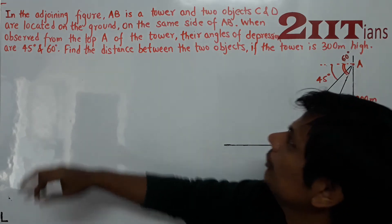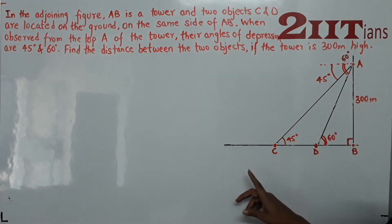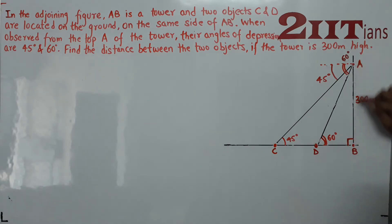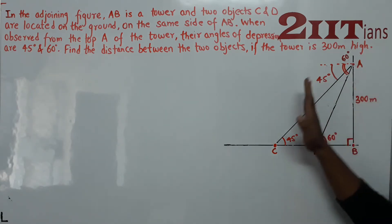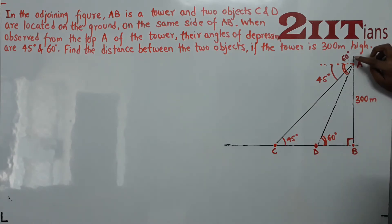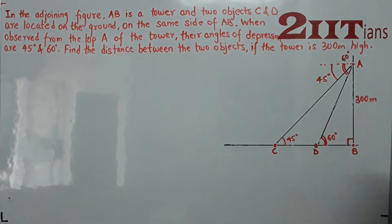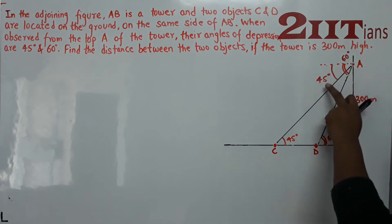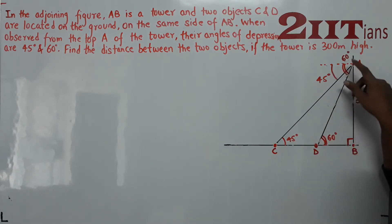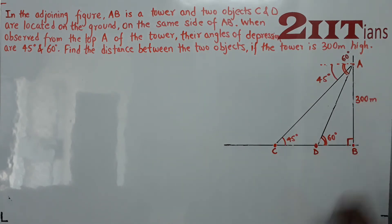In the adjoining figure, AB is a tower and two objects C and D are located on the ground on the same side of AB. When observed from the top of the tower, their angles of depression are 45 degrees and 60 degrees. The alternate angles are 60 and 45 degrees. Find the distance between the two objects if the tower is 300 meters high.